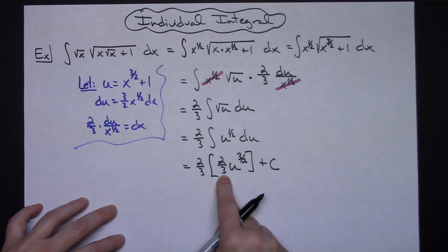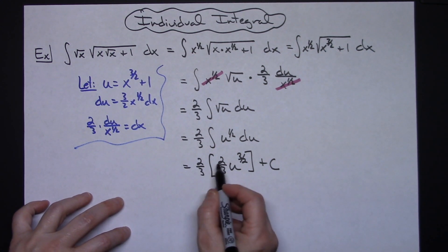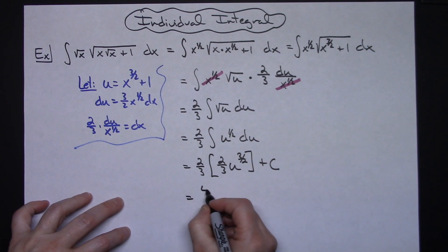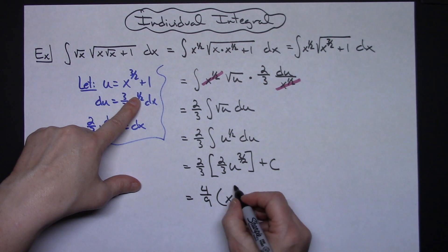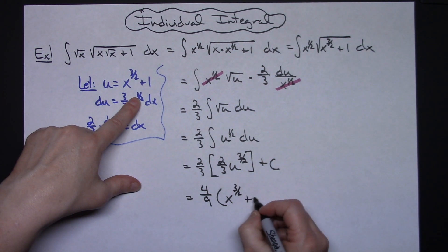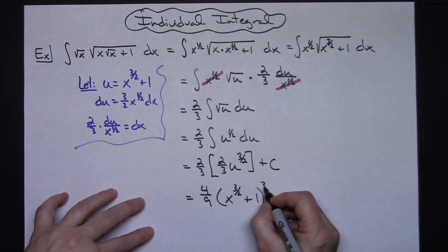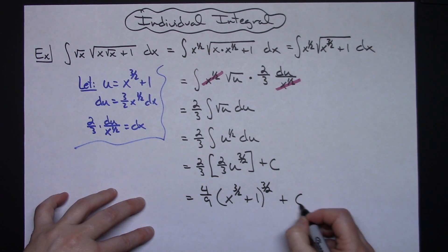I can multiply these back together and put my u in I think all at the same time. So multiplying there I would have a 4 ninths out in front replacing u with x to the 3 halves plus 1 raised to the 3 halves and then plus c.